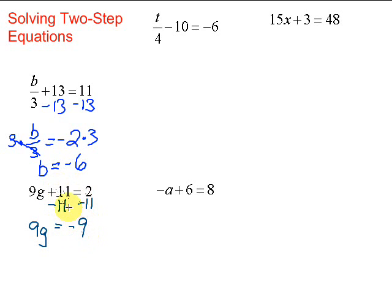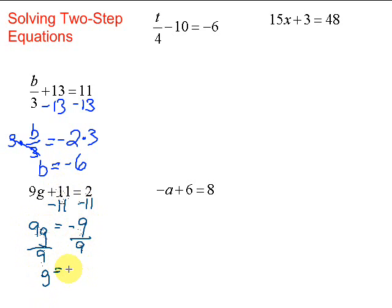Now we have 9 times g. What's the opposite of times 9? That would be divided by 9. So we're going to divide both sides of our equation by 9. We end up with g equals negative 9 divided by positive 9, which is negative 1.